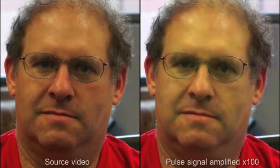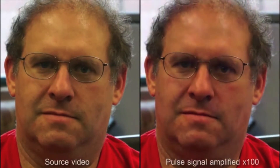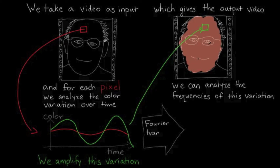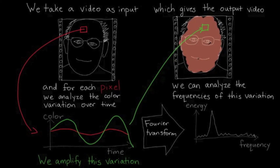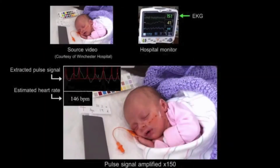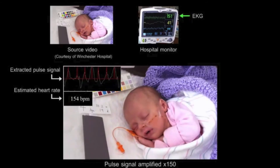In this example, the pulse signal is amplified 100 times. We can also analyze the frequencies of this signal and extract the heart rate. This doesn't require attaching any sensors to the patient, and the accuracy is comparable with hospital-grade monitors.